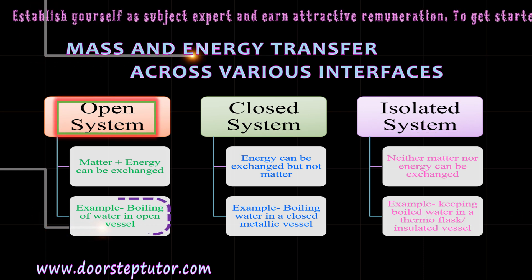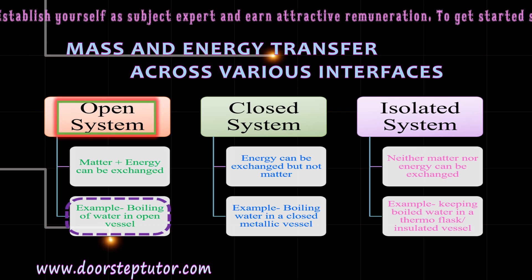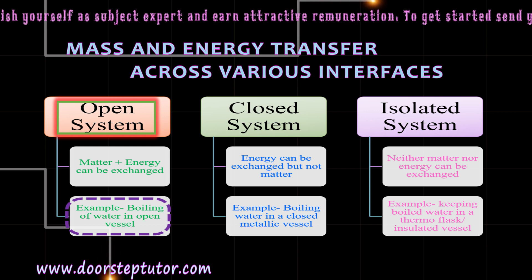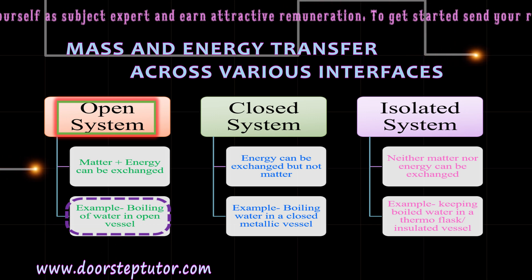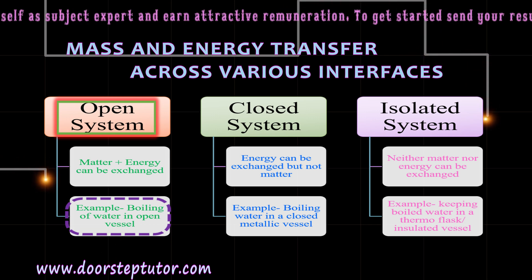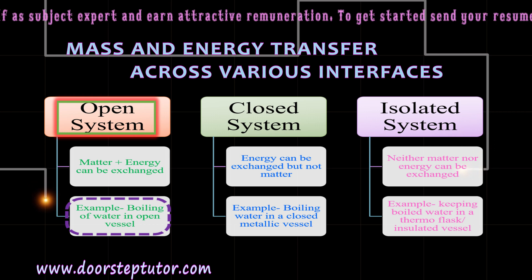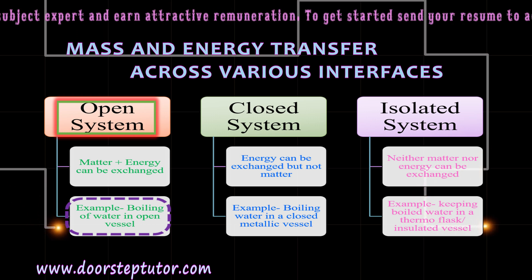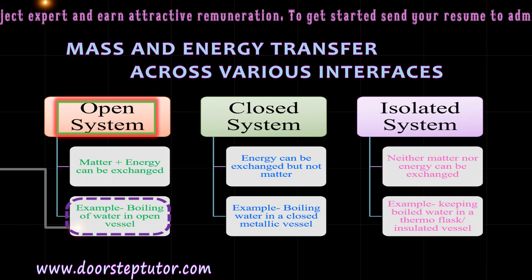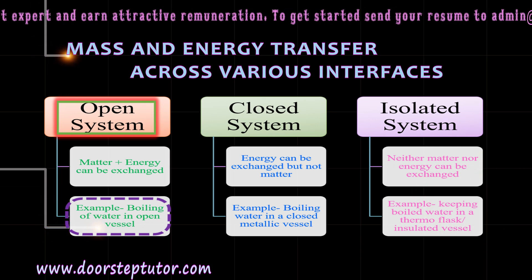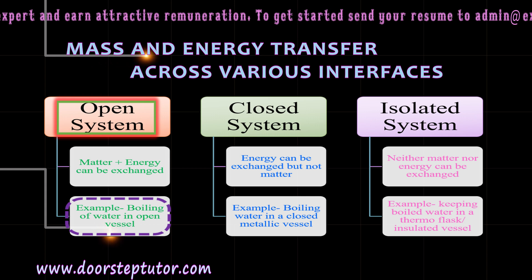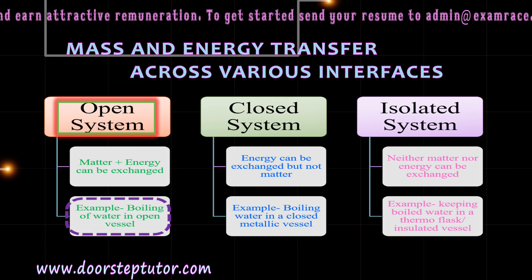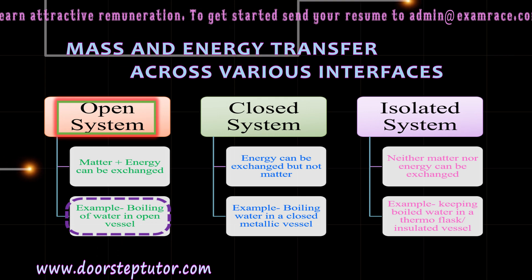An example of an open system is the boiling of water in an open vessel. In an open vessel, water vapor and heat can be exchanged — water vapor is the matter and heat is the energy. So, boiling of water in an open vessel is an example of an open system.